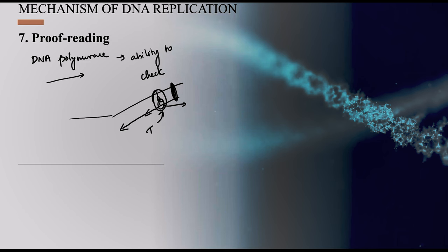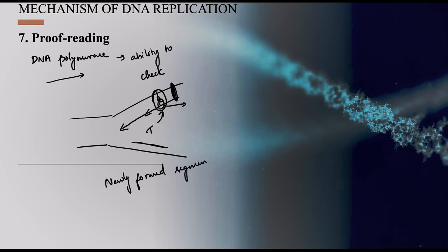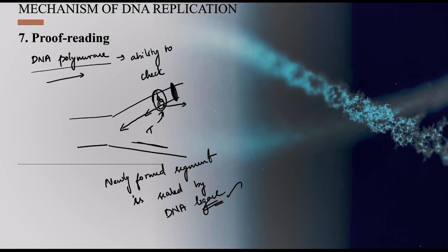After proofreading, the newly formed segment is sealed by DNA ligase. So both DNA polymerase and DNA ligase play important roles in this proofreading step. This completes the seven-step mechanism of DNA replication.